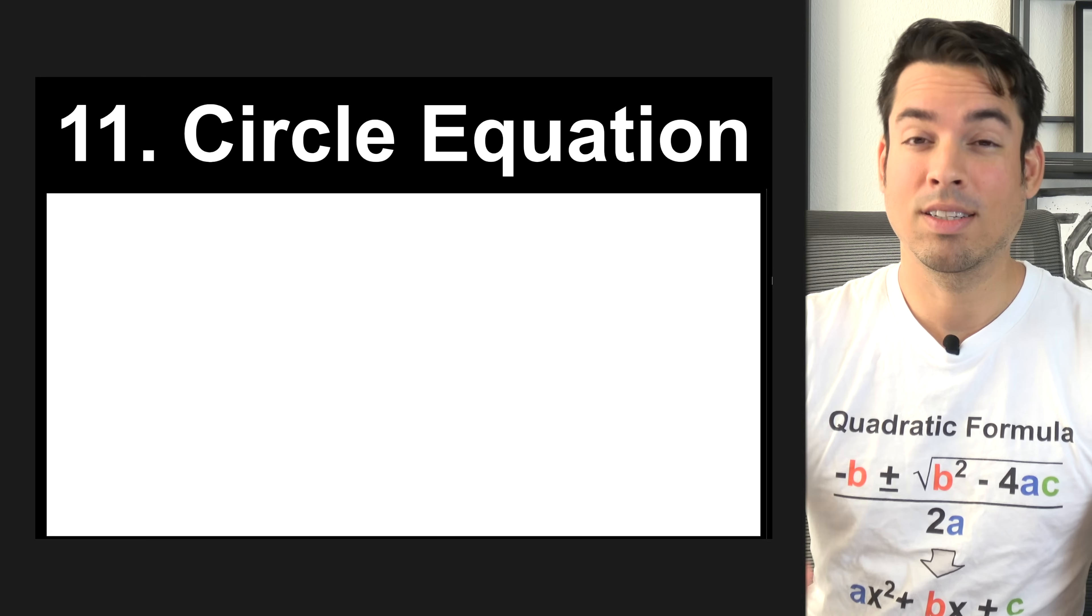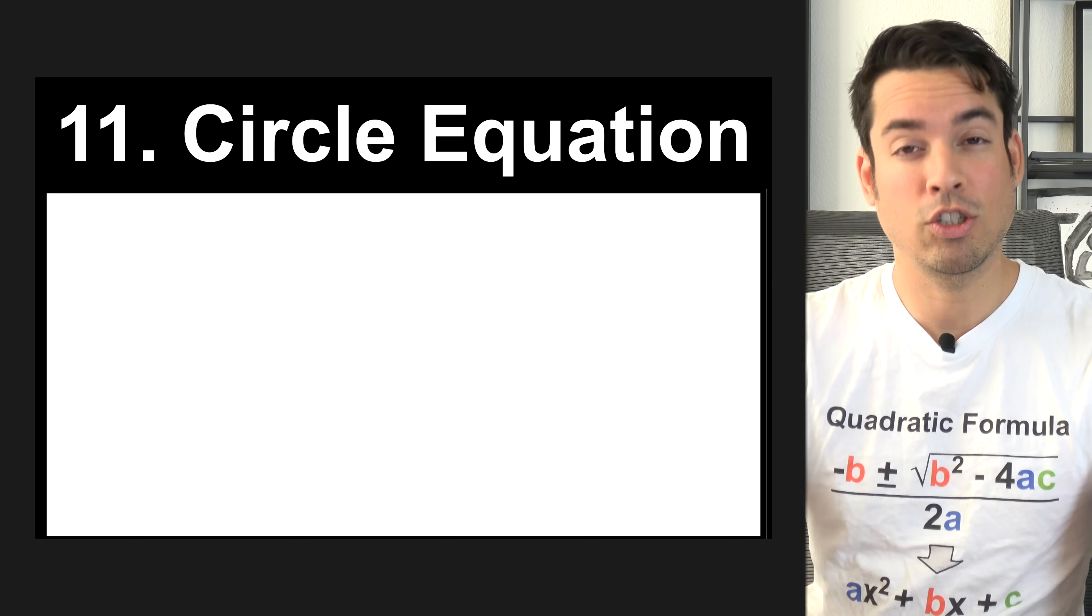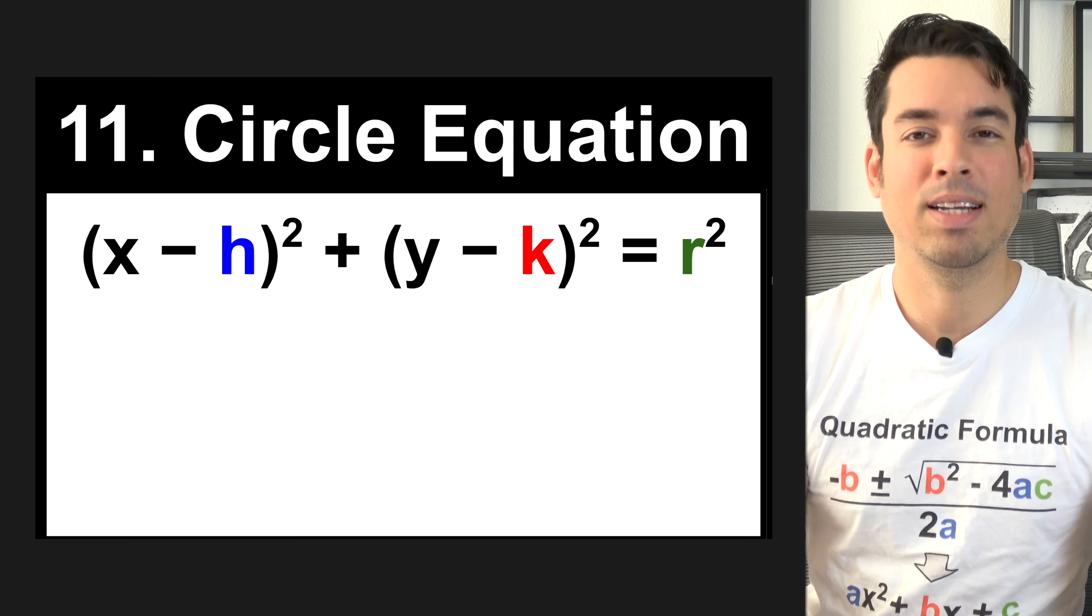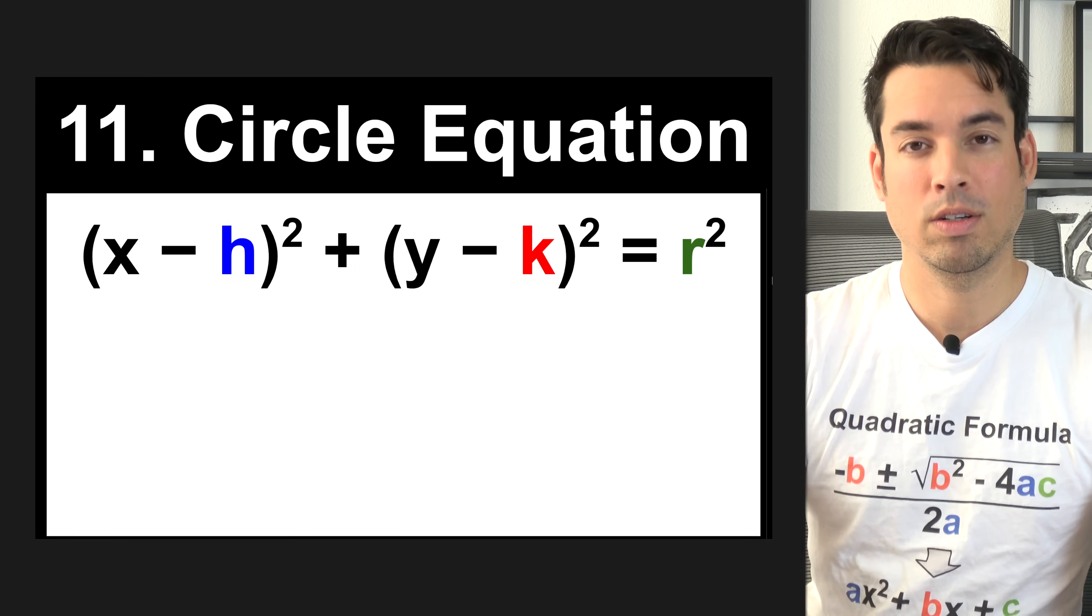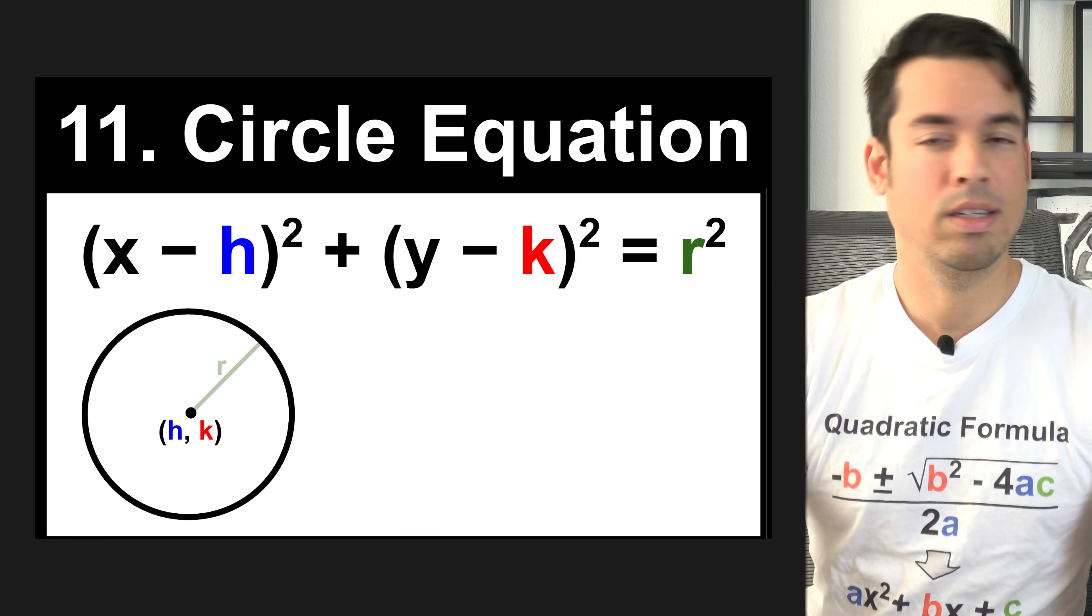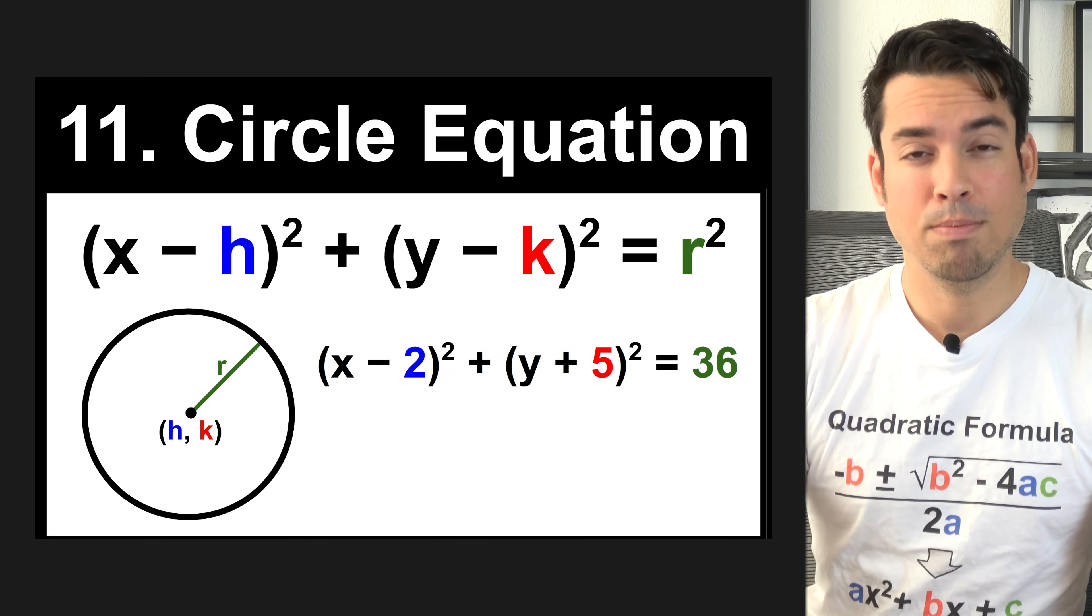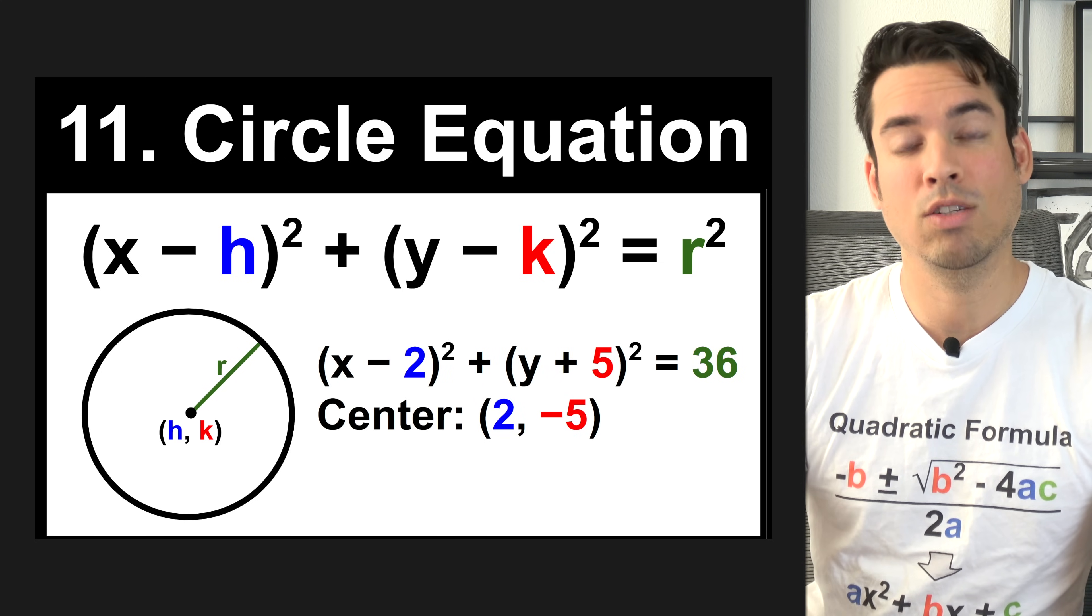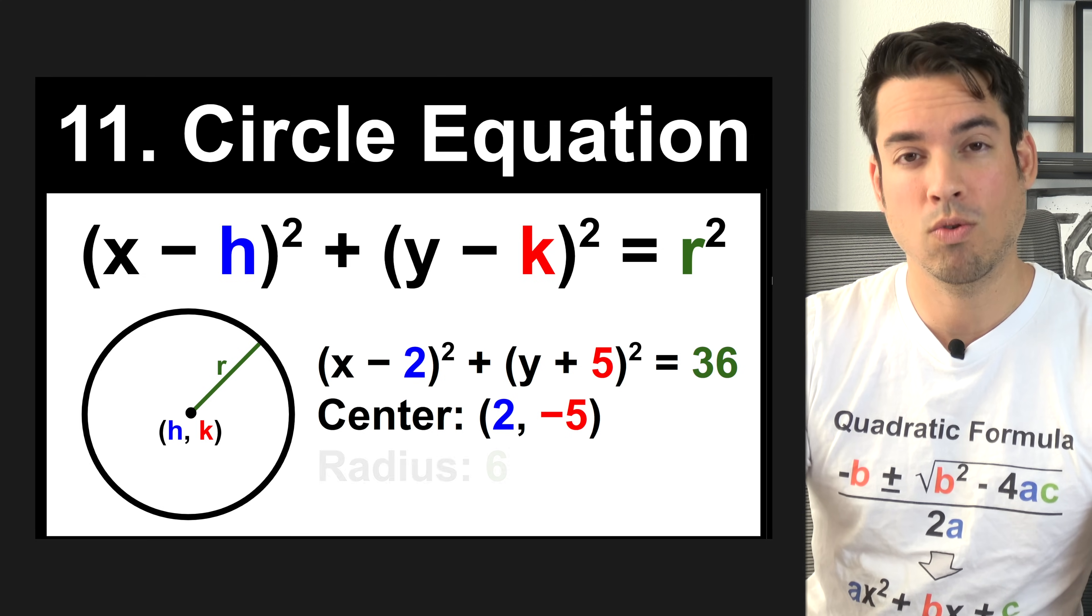Next, we have the circle equation. This is a super important formula. This always shows up in the SAT, and it is x minus h squared plus y minus k squared equals r squared. If we look at a circle, we see that the center is h comma k, and the radius is r. If we take this example here, the center would be at 2 negative 5, and the radius would be the square root of 36, which is 6.